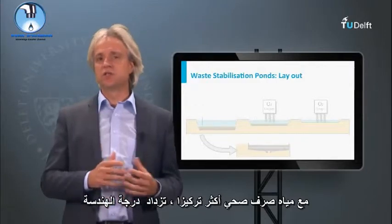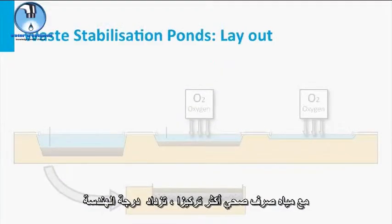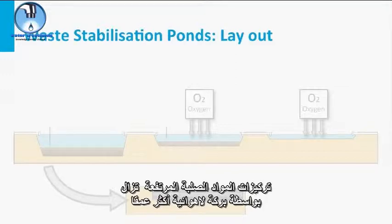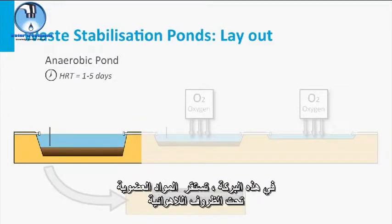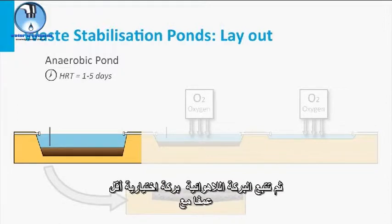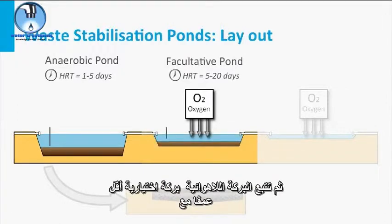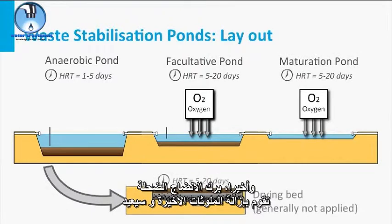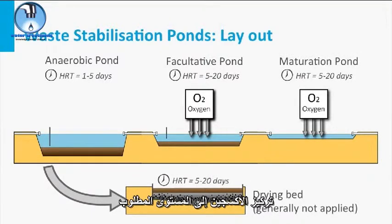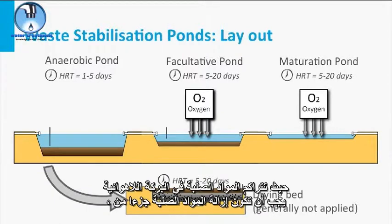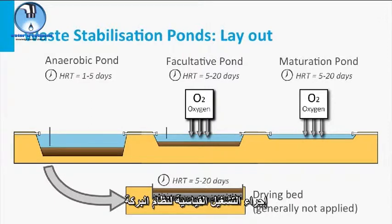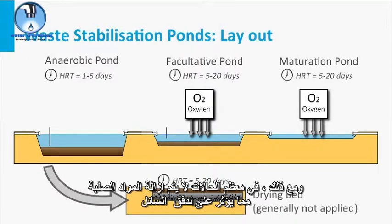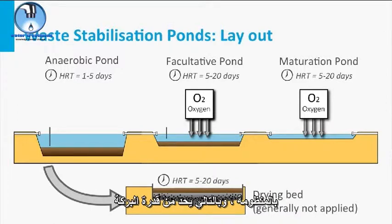With more concentrated sewage, the degree of engineering increases. High suspended solids concentrations are largely scavenged by a deeper anaerobic pond, where organic matter is stabilized under anaerobic conditions. This is followed by a less deep facultative pond with only low dissolved oxygen concentrations. Finally, the shallow maturation pond removes the final pollutants and restores the oxygen concentration to the required level. Since solids accumulate in the anaerobic pond, solids removal should be part of standard operation. However, in most cases solids are not removed, eventually impacting the liquid flow regime and reducing pond capacity.